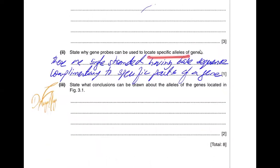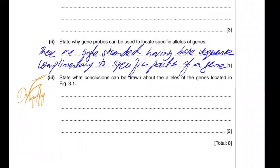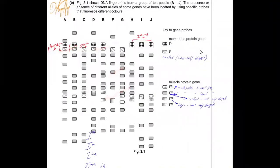Some gene probes can be used to locate specific alleles of a gene. Gene probes are single-stranded segments having base sequences complementary to specific parts of the gene. A straightforward conclusion can be drawn about the alleles located — all the information extracted from this data can be added as part of the answer.